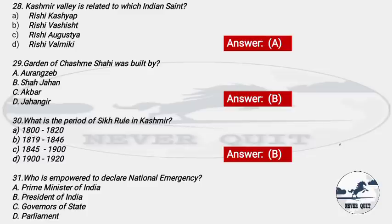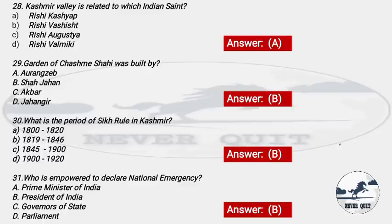Question 31: Who is in power to declare national emergency? Options: A) Prime Minister of India, B) President of India, C) Governor of State, D) Parliament. The right answer is option B — President of India. The President of India has the power to declare national emergency.